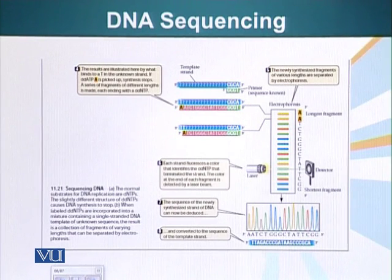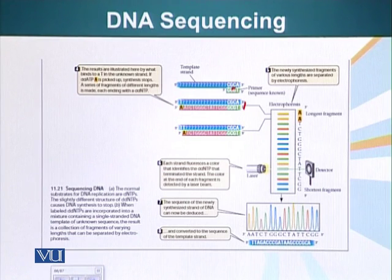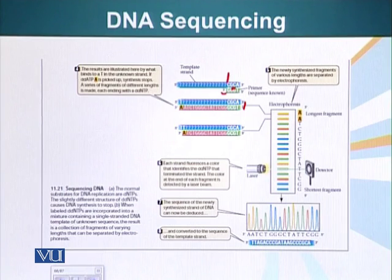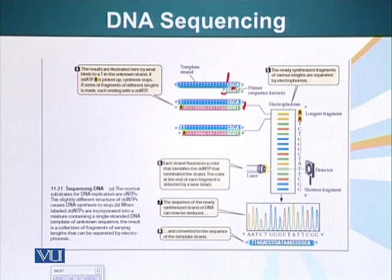When we run the reaction, these special bases are incorporated at random. For example, when the primer has annealed and is being extended, the next base added is complementary to the template. If a normal base is added, extension continues fine, but if one of those special di-deoxyribonucleotide bases attached to a specific color is added, the reaction stops right there and we generate a DNA band of that length.